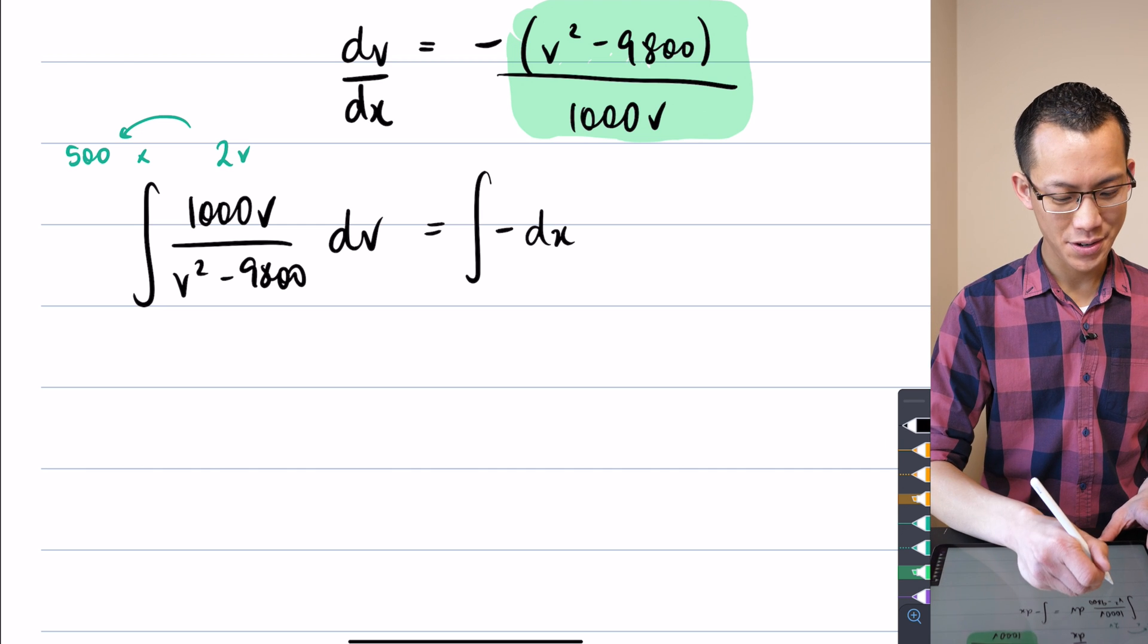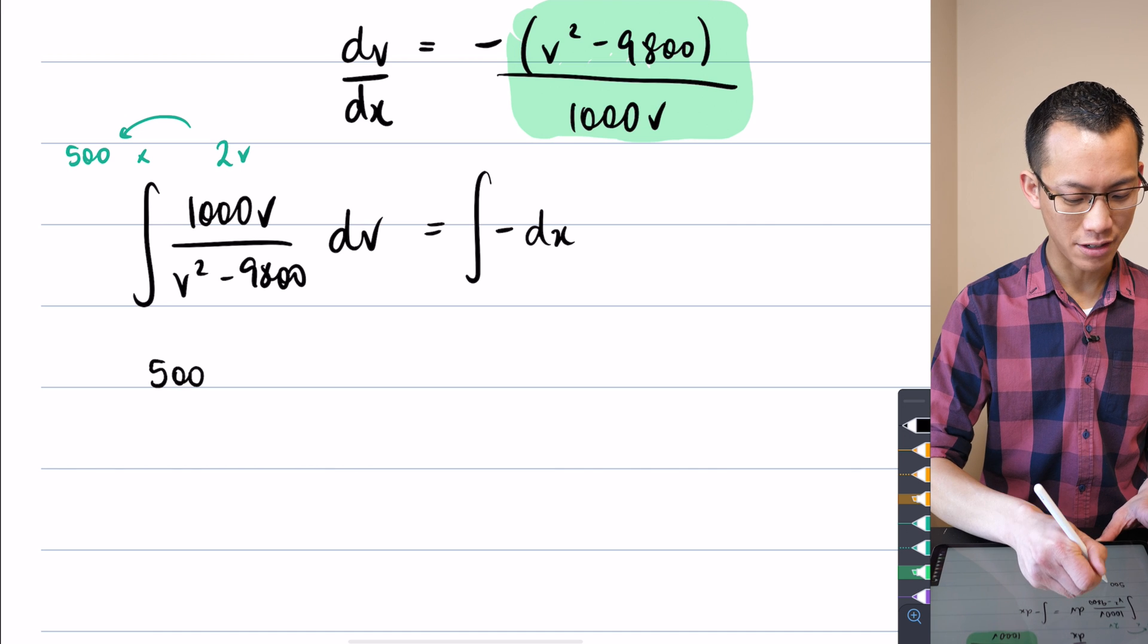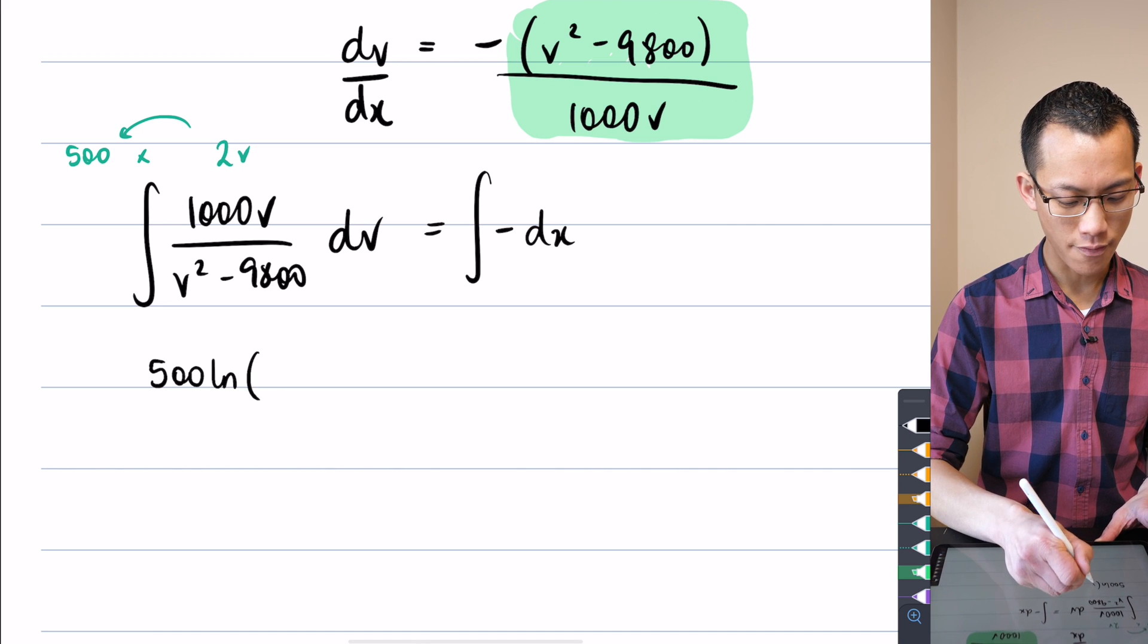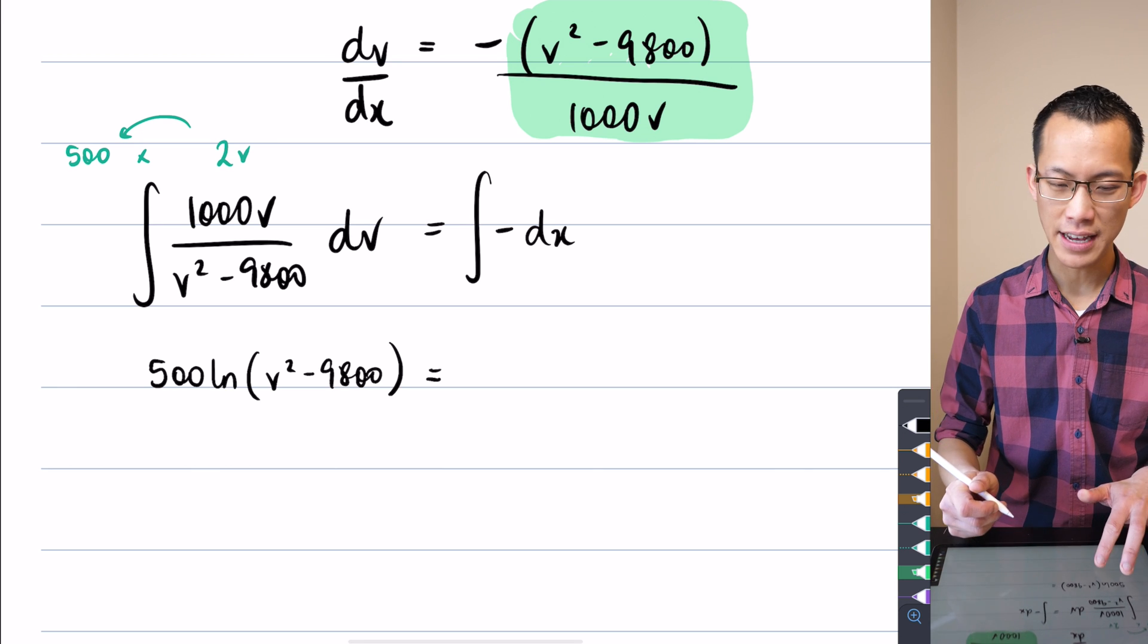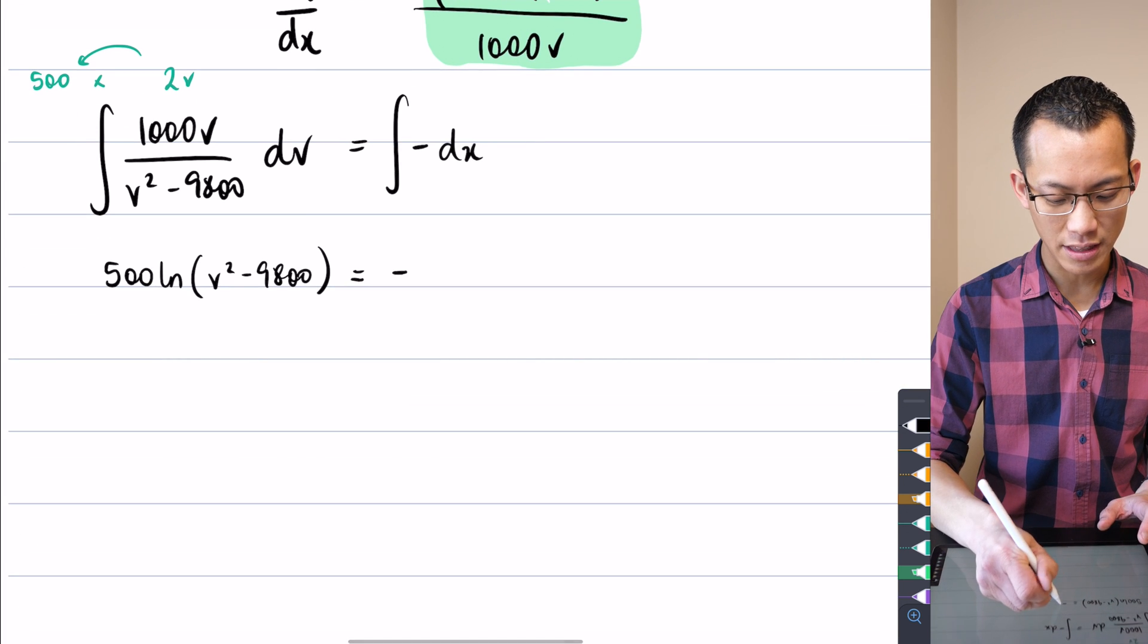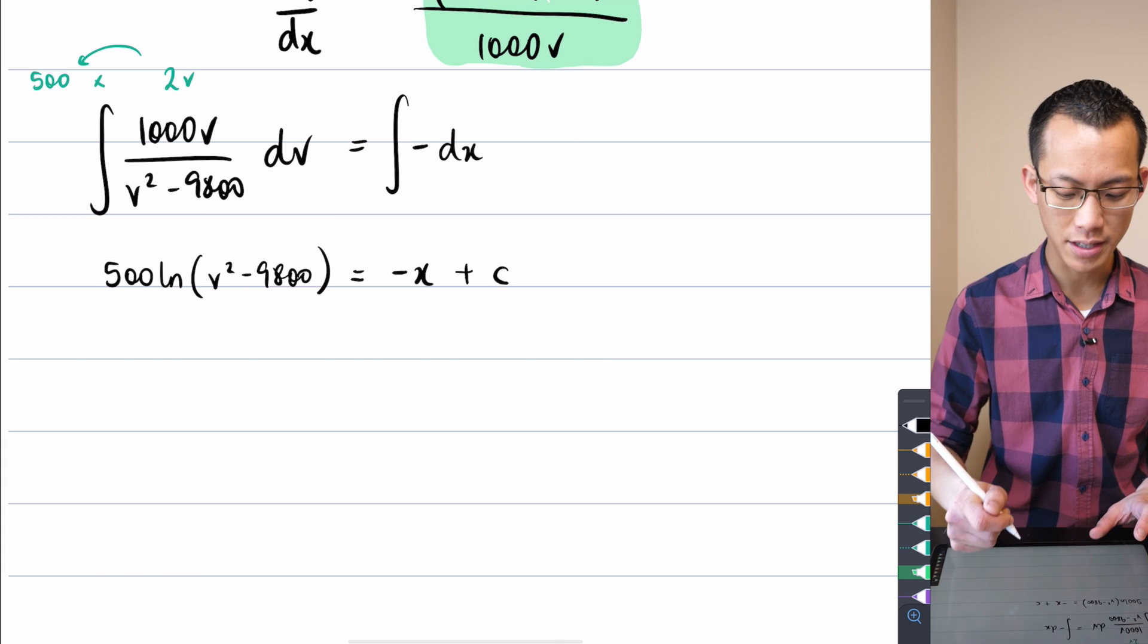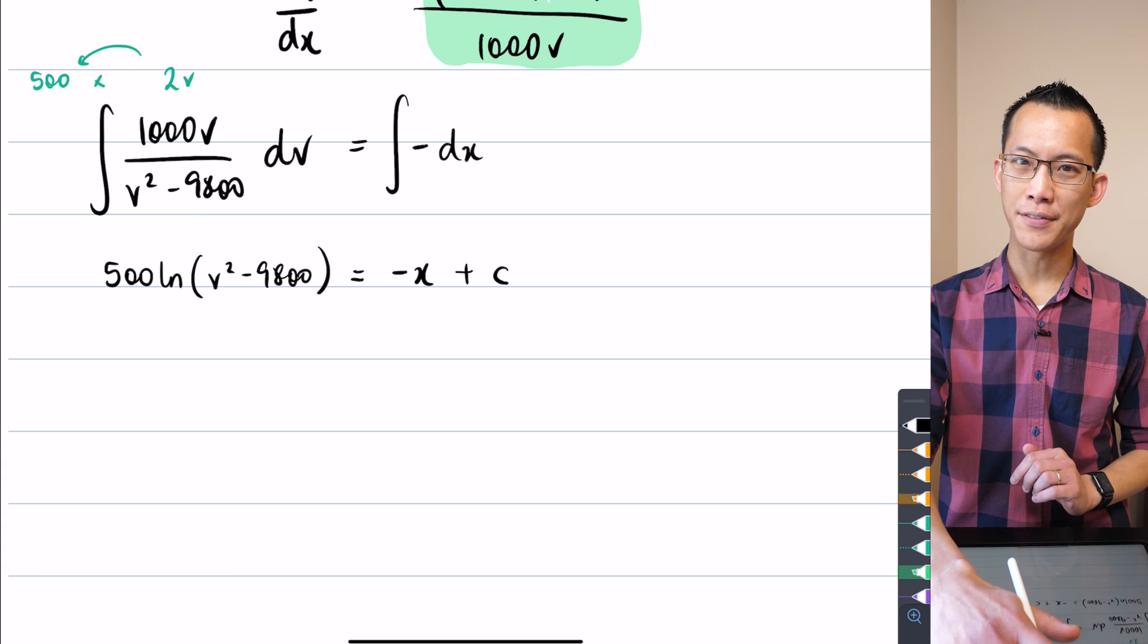Okay so from there what I'm going to do is get a 500, I'll do the integration now, log of v squared minus 9800, that's on the left hand side and then the right hand side I just get this nice linear function plus the constant that comes from both of the indefinite integrals.